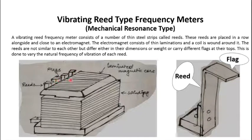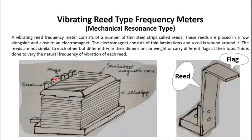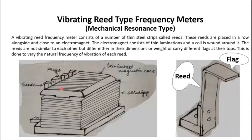Once a reed goes into resonance, it oscillates with a higher amplitude that is quite evidently visible to the naked eye. We know for what frequency each reed has been tuned, so if a reed is tuned for 50.5 Hz or 51 Hz and the supply frequency matches, that reed will oscillate at a higher amplitude. The tops of the reeds, known as flags, are painted white, and against a darker background this white is quite evidently visible, allowing us to see which flag is oscillating at a higher amplitude and thus determine the supply frequency.